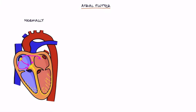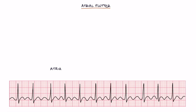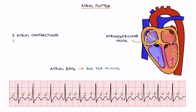Normally, the electrical signal passes through the atria once, stimulating a contraction, then disappears through the atrioventricular node into the ventricles. Atrial flutter is caused by a re-entrant rhythm in either atrium. The electrical signal recirculates in a self-perpetuating loop due to an extra electrical pathway in the atria, causing an atrial rate of around 300 beats per minute. Due to the long refractory period of the AV node, this often results in 2:1 conduction, giving a ventricular rate of 150 beats per minute.